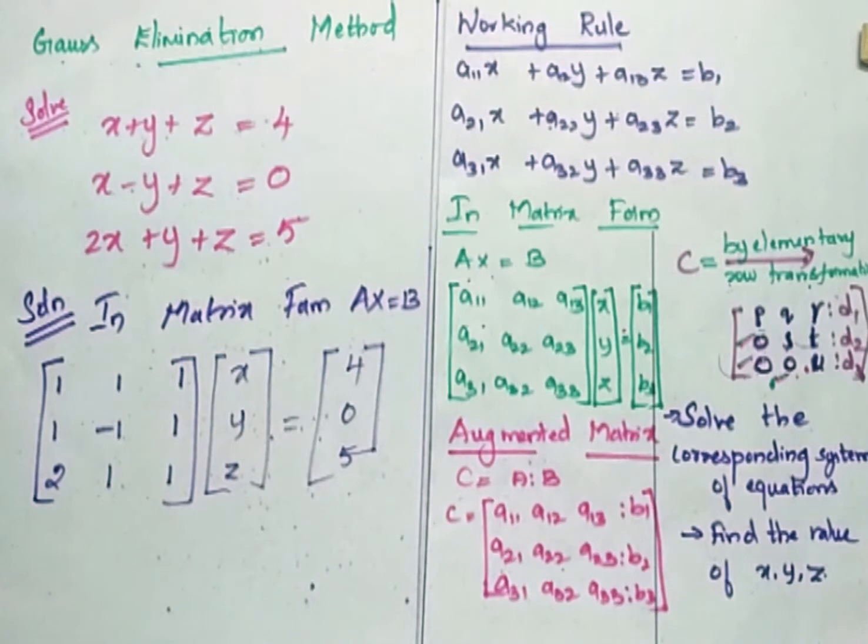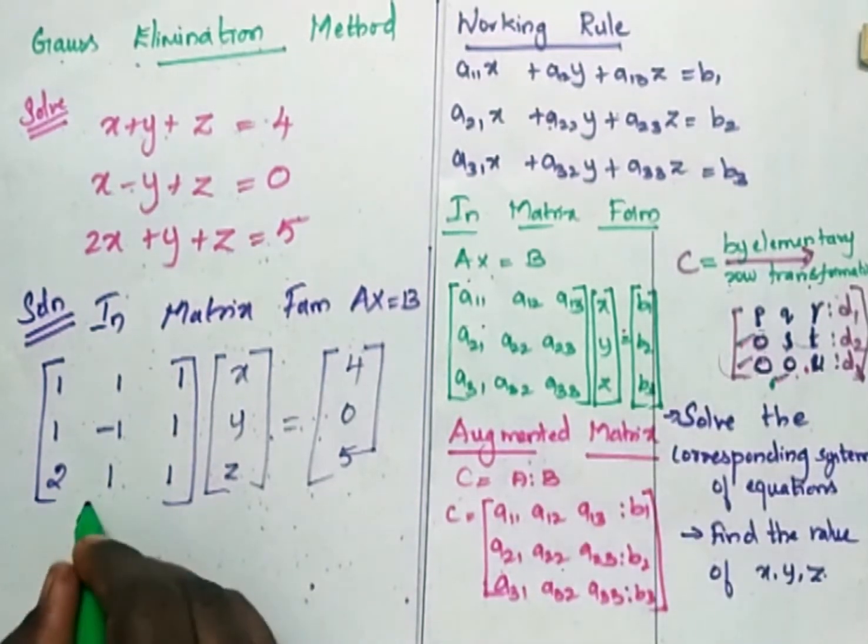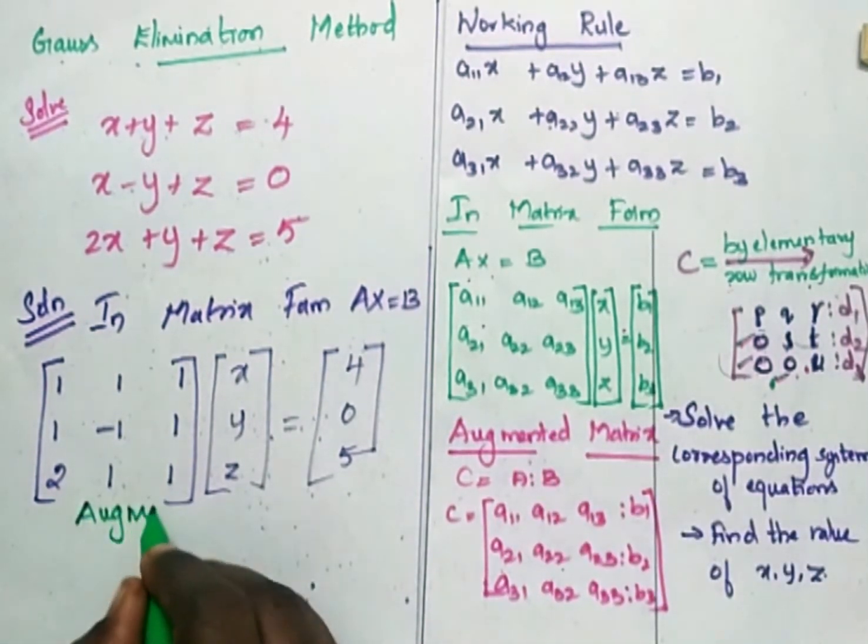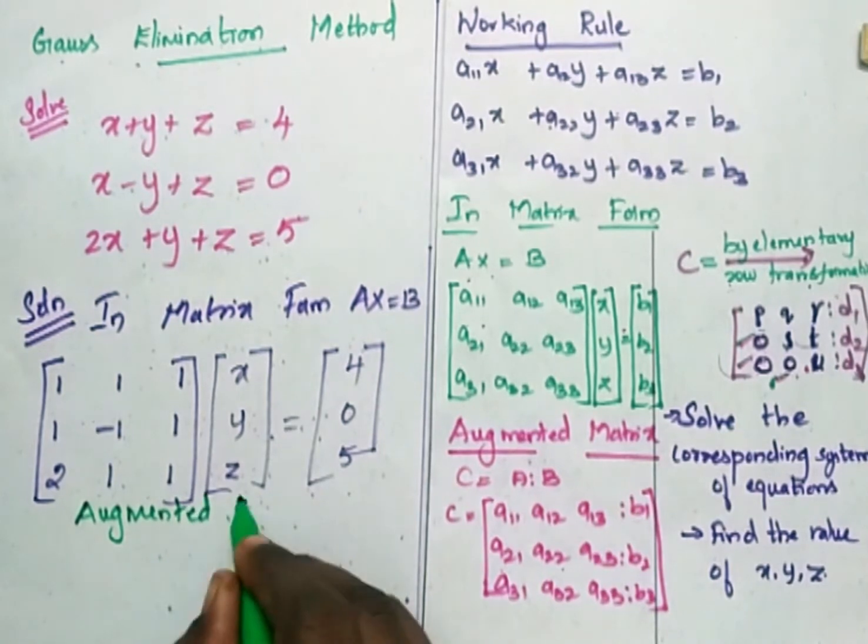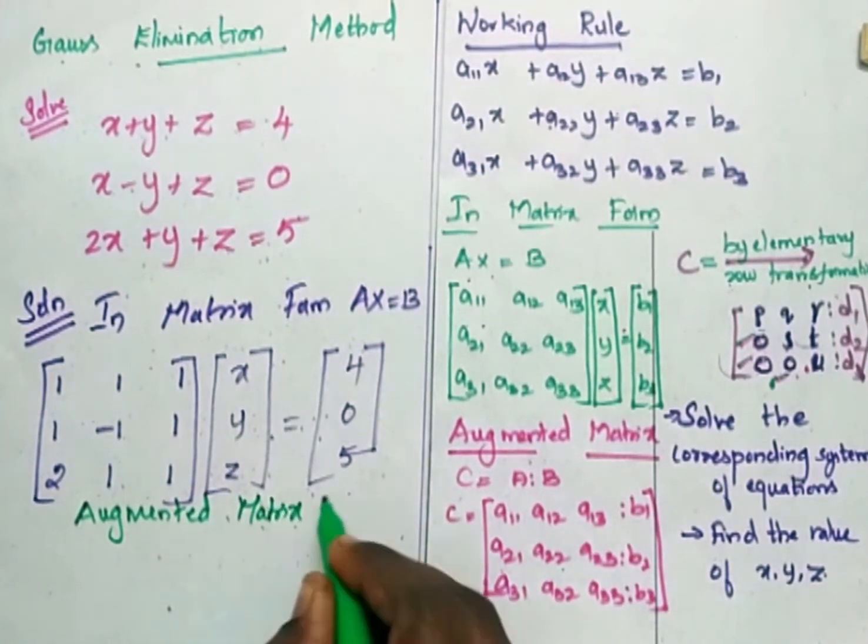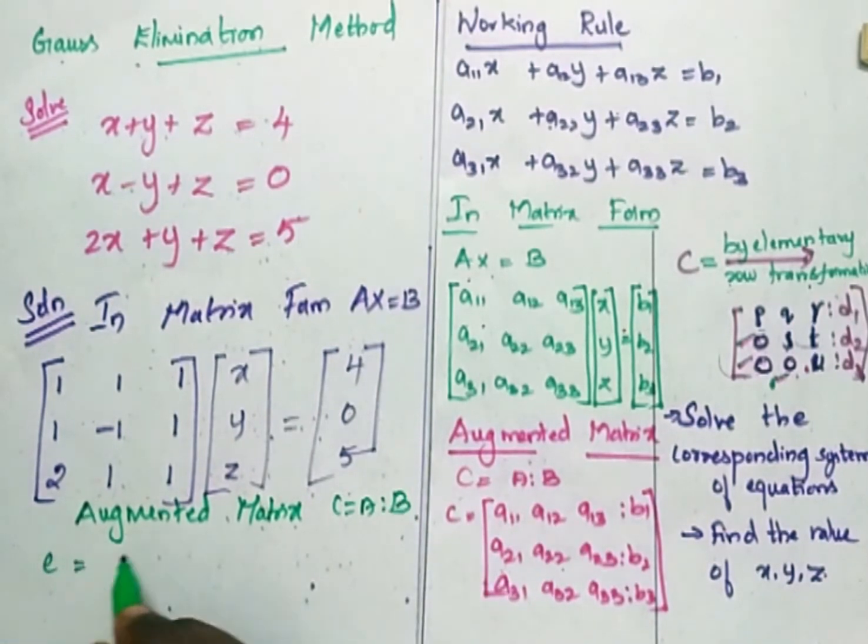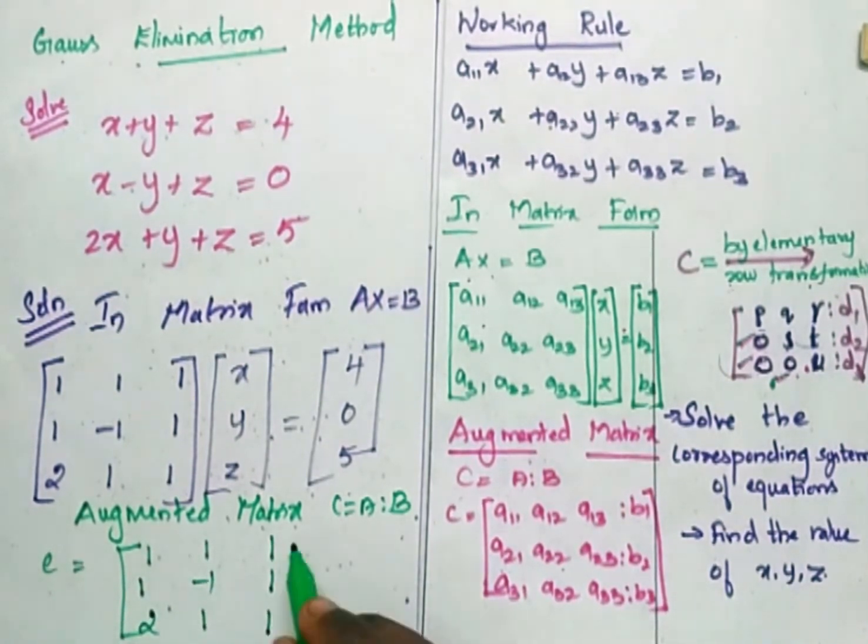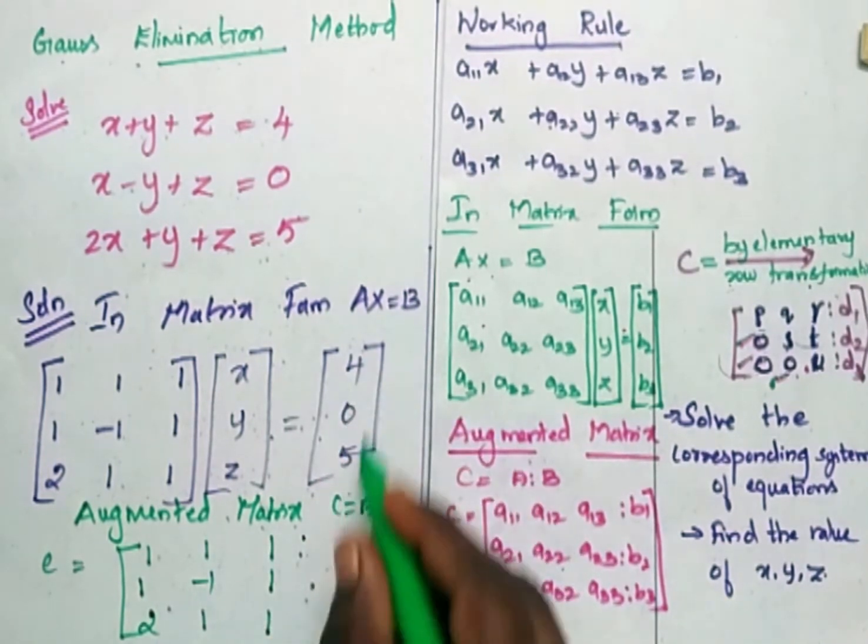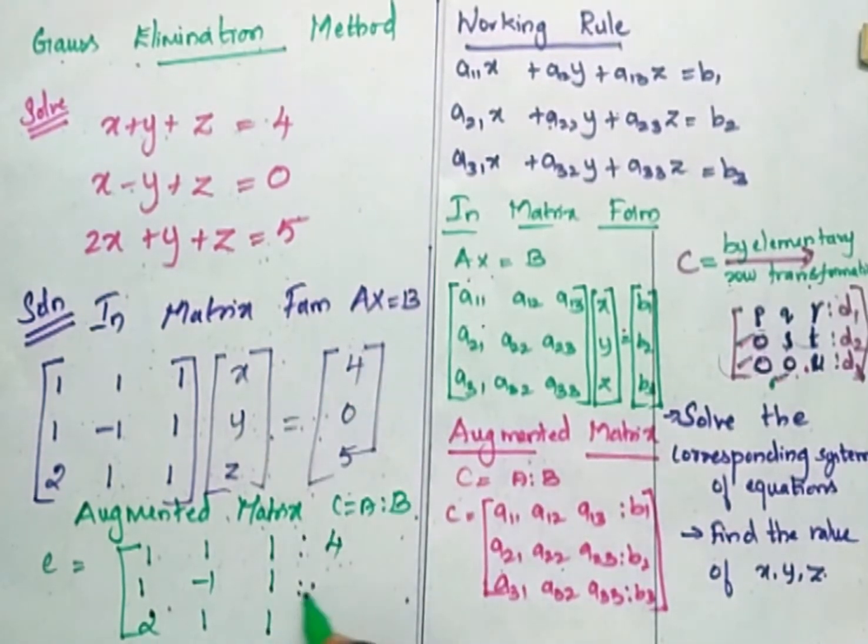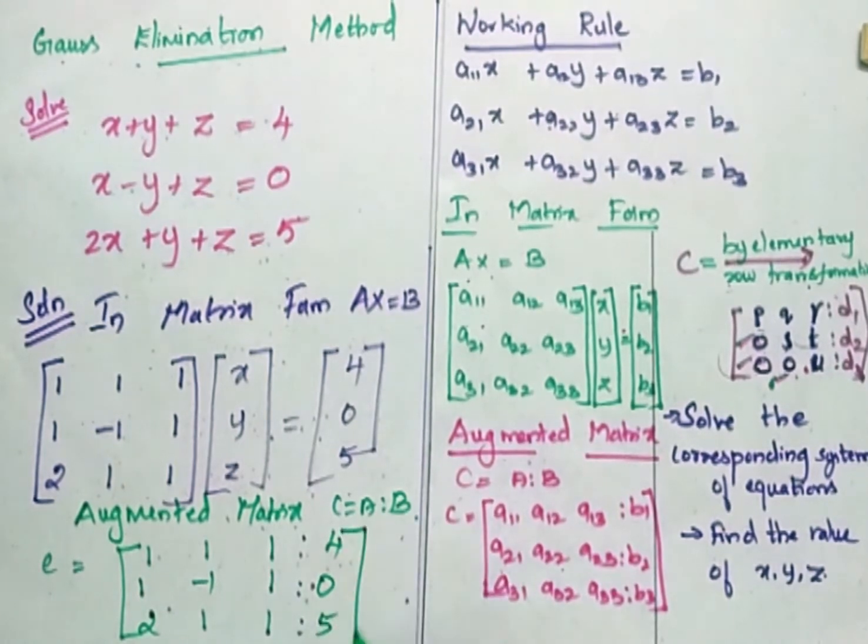Now this has to be converted to augmented matrix. So my augmented matrix is C is equal to A is to B. So now C is equal to 1, 1, 1, 1, 1, minus 1, 1, 2, 1, 1, where I take up the B values here: 4, 0, and 5.